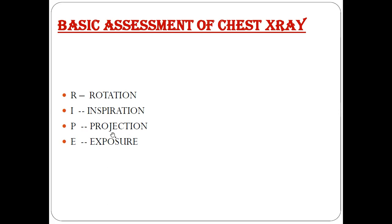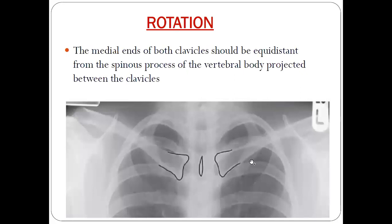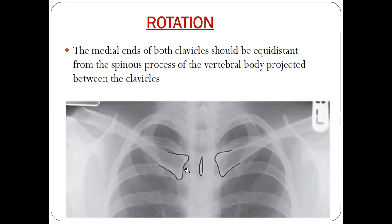In this video we'll be talking only about rotation. When you look at a chest x-ray, you can see the spine and the spinous process. You measure the distance between the spinous process and the medial end of each clavicle. If the distance is equal on both sides, the x-ray is centrally placed with no rotation.